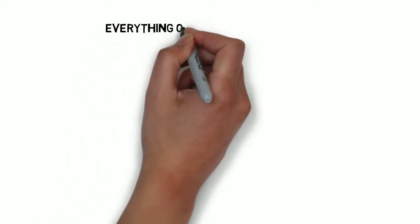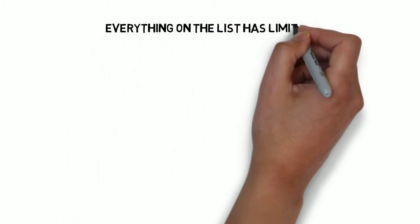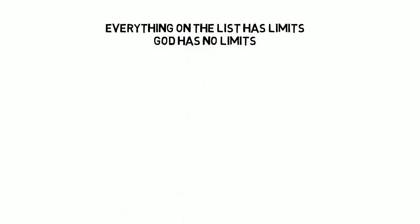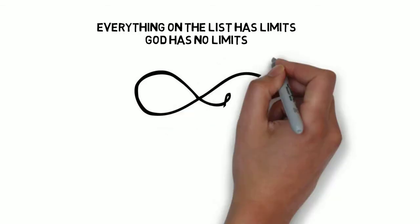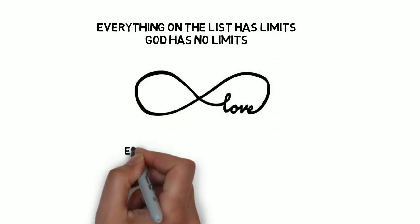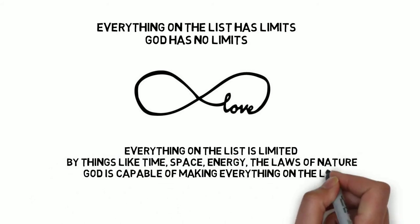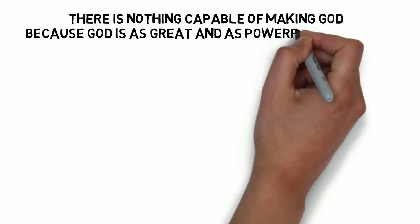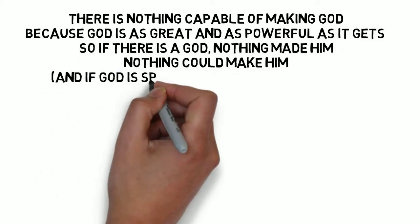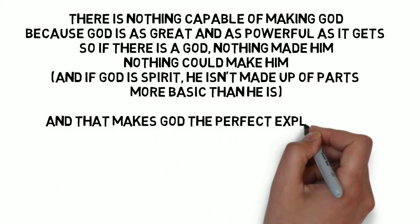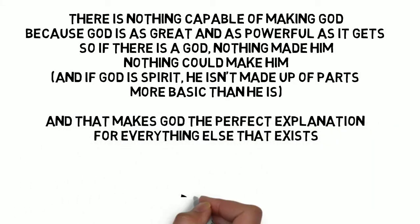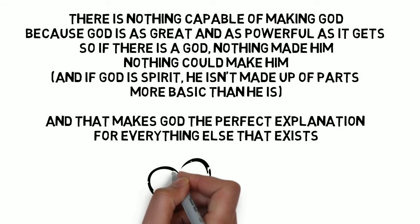Well, think about everything on the list. Everything on the list of contingent things is limited. But God has no limits. God is infinitely powerful. God has infinite power and love. Everything on the list is limited by things like time, space, energy, or the laws of nature. But God would be capable of making anything on the list. In fact, he's capable of making anything he wants. There would be nothing capable of making God because he's as great and as powerful as it gets. And that makes God the perfect explanation for everything else that exists. You can't get greater than God. Nothing can make him. Nothing can explain him. He's the perfect stopping point for explanation.